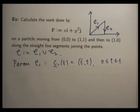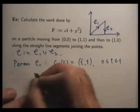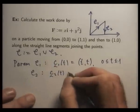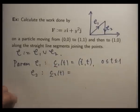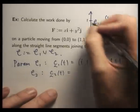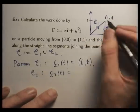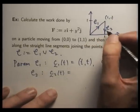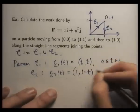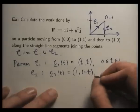And for C2, again you can use the algorithm. Notice that there's no change in the x component along C2. The only change is going in y. So if you apply that algorithm, you'll get (1, 1-t).